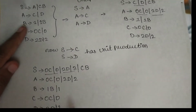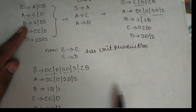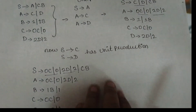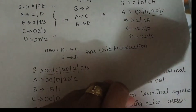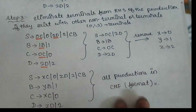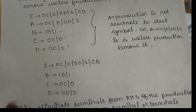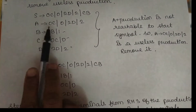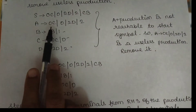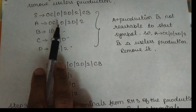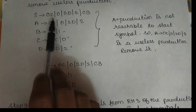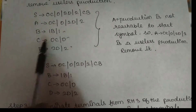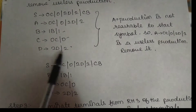After removing unit productions, we check for useless symbols. You must check if there are any useless symbols. You need to check all productions that can generate full terminal symbols. For example, A produces 2, B produces 1, C produces 0, D produces 2.